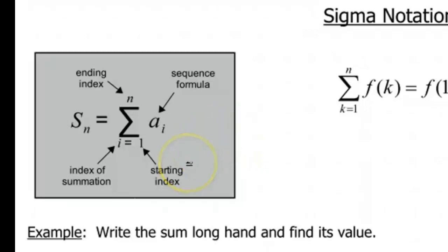So the bottom number is your starting index. The top number is your ending index. We're calling the sigma s sub n, that just means sum. And then this a sub i is your sequence formula, so it's also your function.